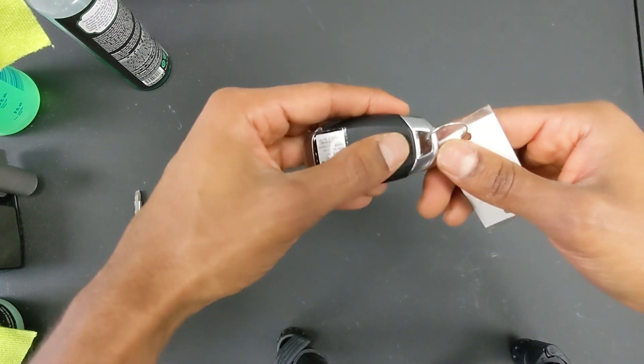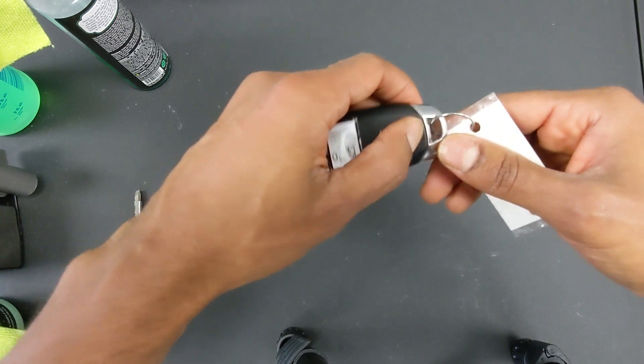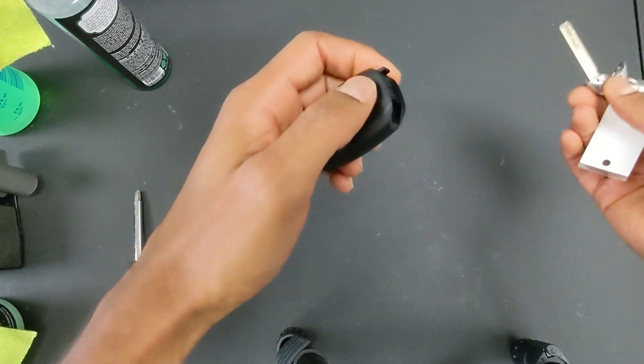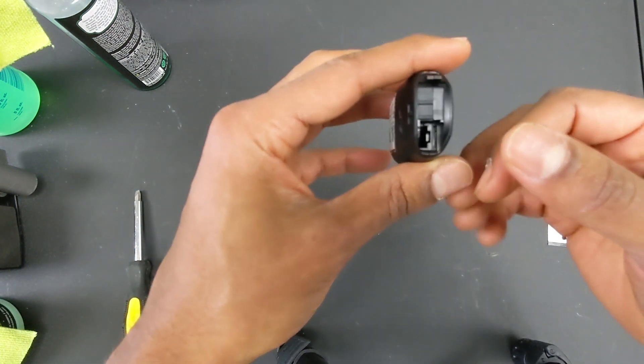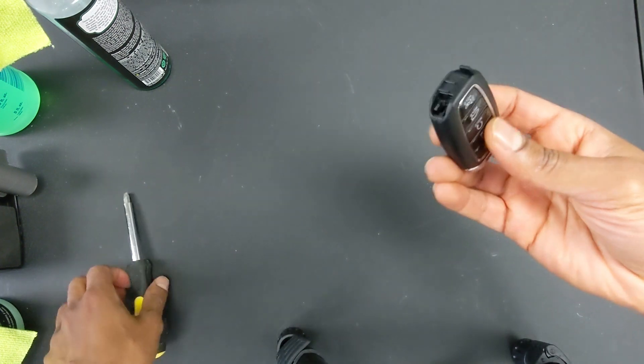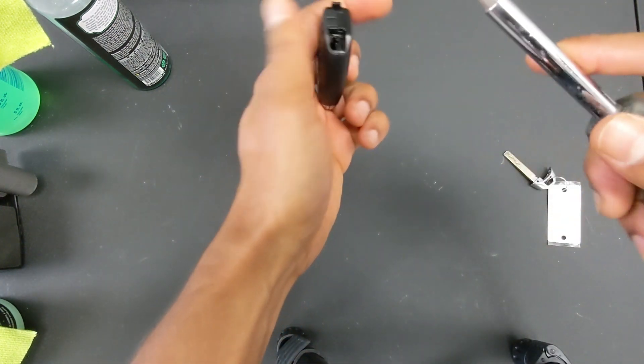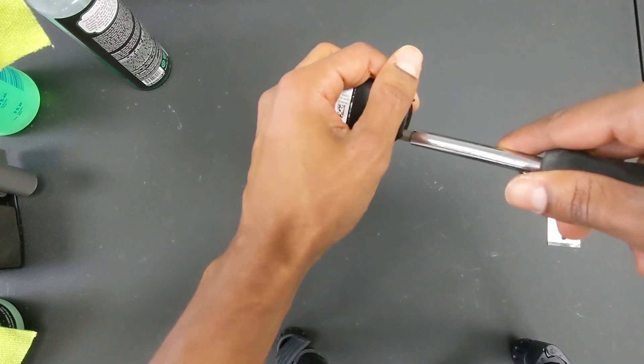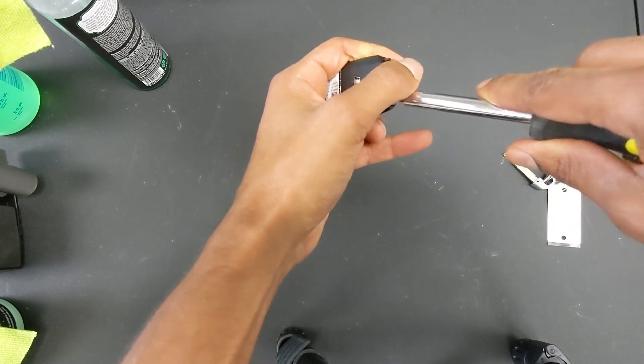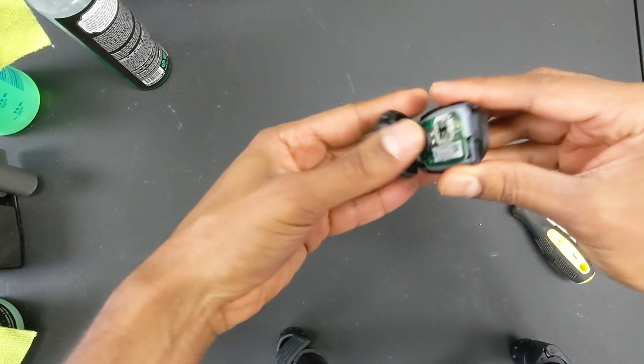First, you need to push up on this tab on the back here in order to release the physical key. And then at that point, you're gonna see a tab right here. Take a flathead screwdriver and put it in that little tab and then turn it so that it separates the two sides.